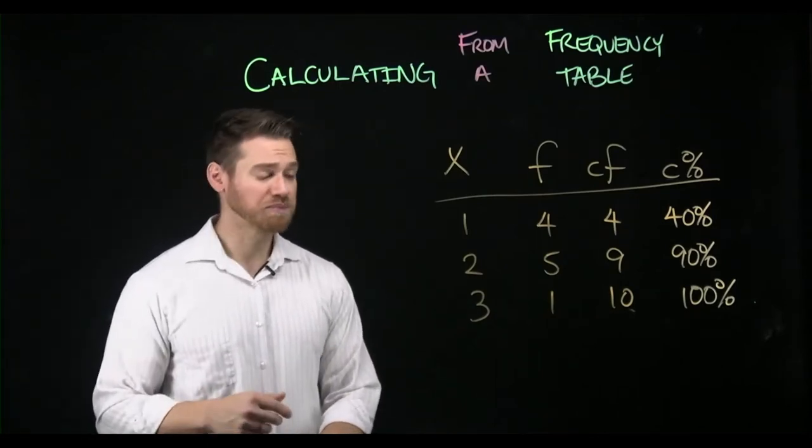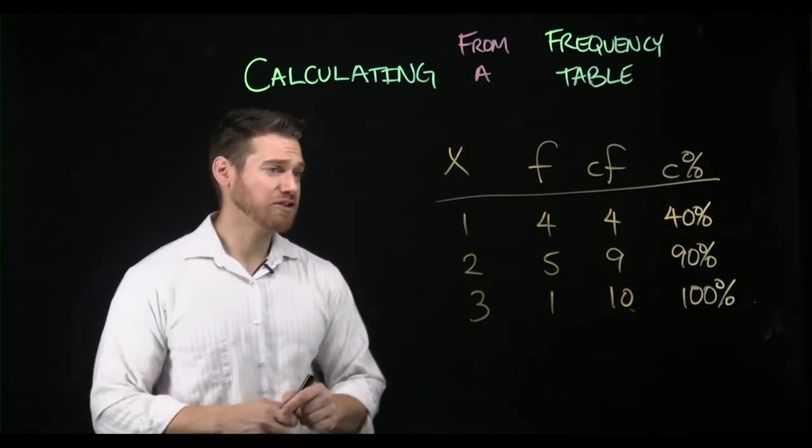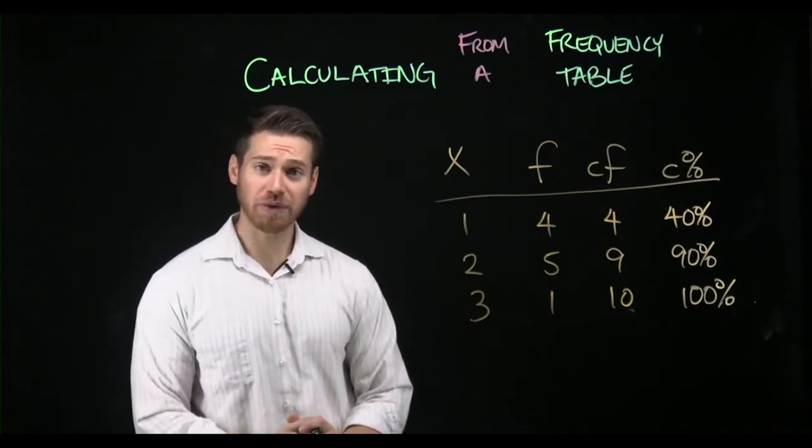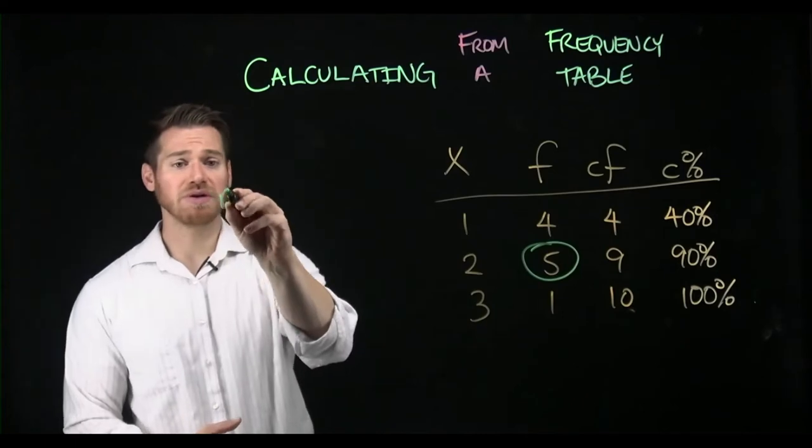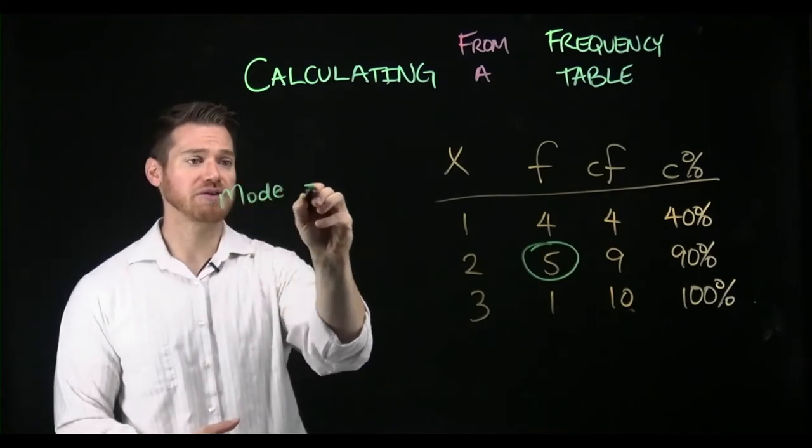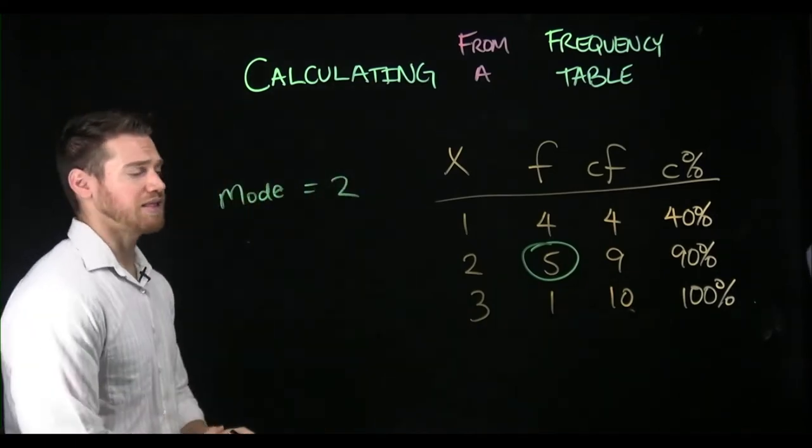If we think about it, for example, what value in our table occurs most frequently? And we can see that really easy by looking at the F values. So our mode is the most frequently occurring value. And here we can easily see that that is two.